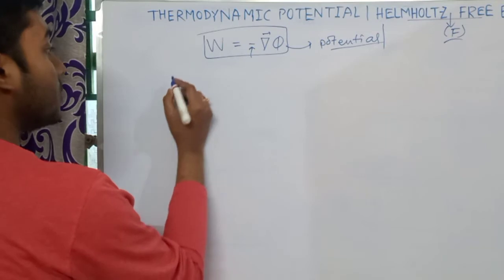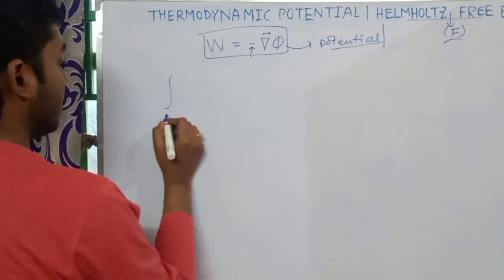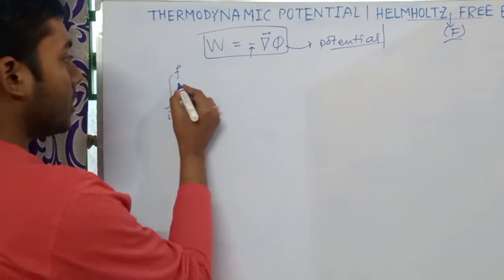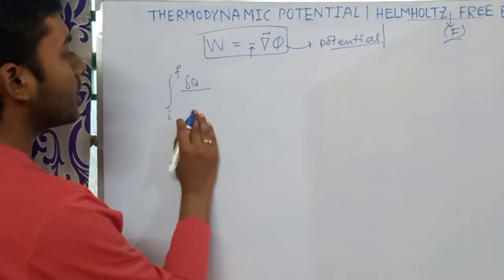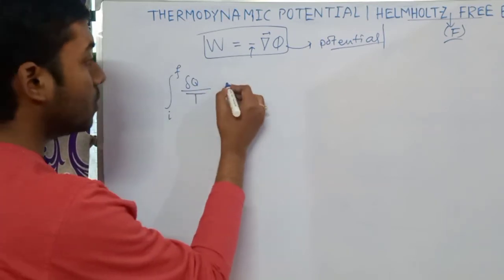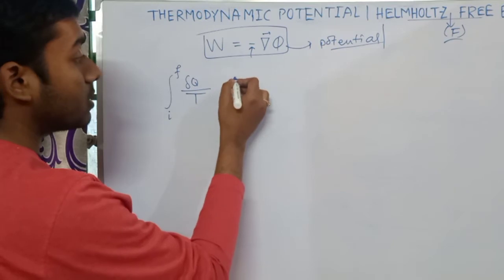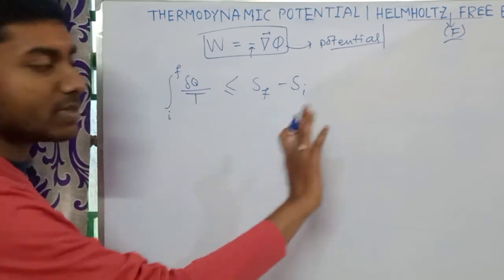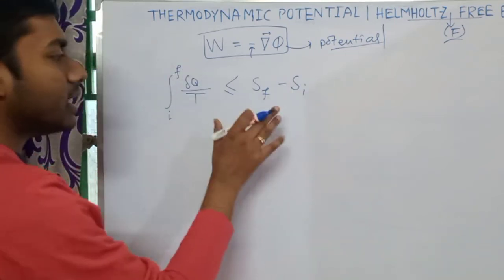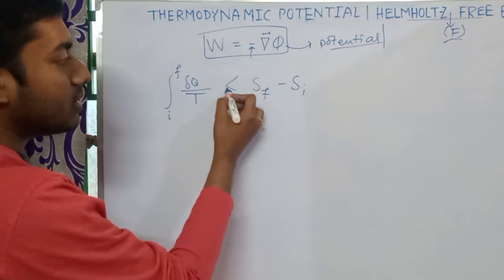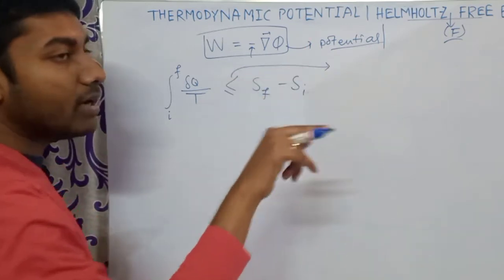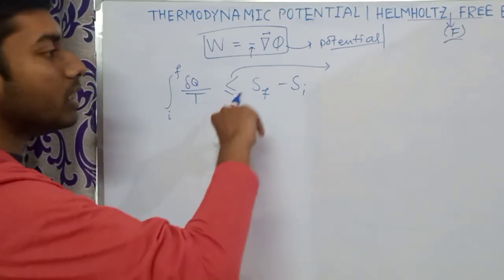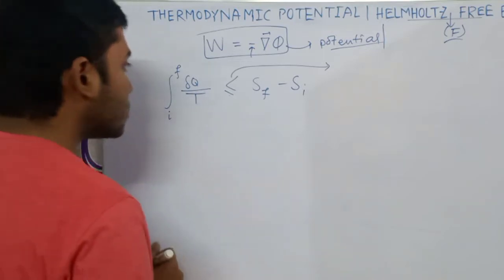From Clausius theorem, we know that the integration from a state i to a final state f of δq over T is less than or equal to S_final minus S_initial, where S means entropy. The less-than sign holds only for an irreversible process, and the equal-to sign holds only when the process is reversible.